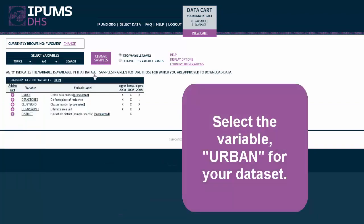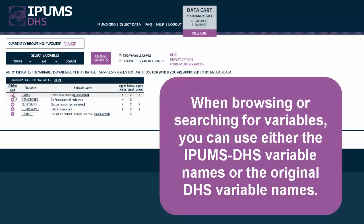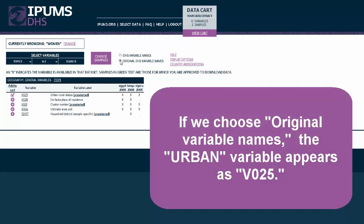Select the variable Urban for your dataset. When browsing or searching for variables, you can use either the IPAMS DHS variable names or the original DHS variable names. If we choose original variable names, the urban variable appears as V025.